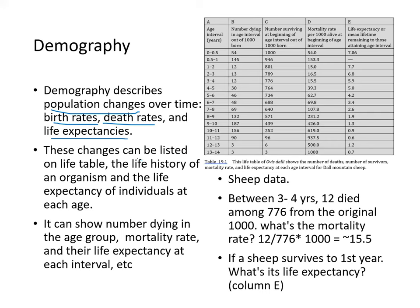These demographic changes can be listed on a life table showing the life history and life expectancy of individuals at each age — including number dying, number surviving, mortality rate, and life expectancy. This example is for Ovis dali, or Dall mountain sheep. For instance, between ages three and four, 12 have died among 776 individuals, giving a mortality rate of 12 divided by 776 times the total, which is 15.5. If a sheep survives to the first year, its life expectancy would be 7.7 years.